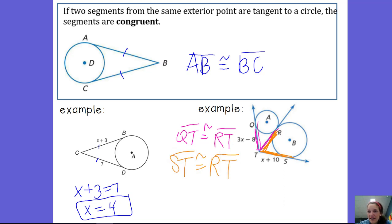And so, by the transitive property, segment QT is congruent to segment ST. This segment QT is congruent to segment ST, because they're both intersecting, those two tangents are both intersecting with the same segment, so they're congruent to each other.